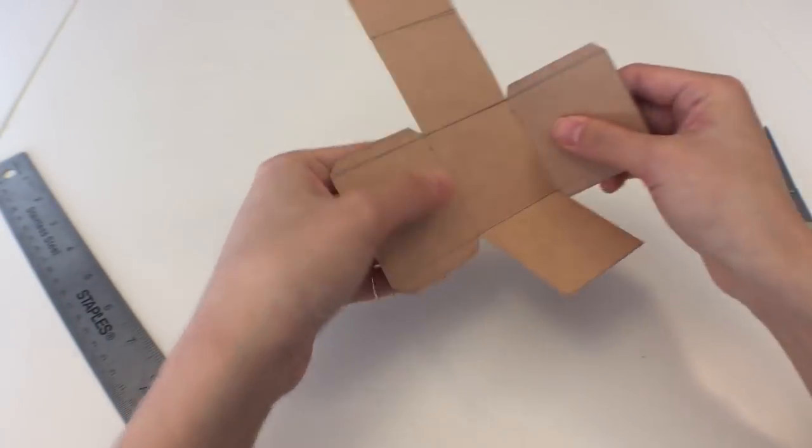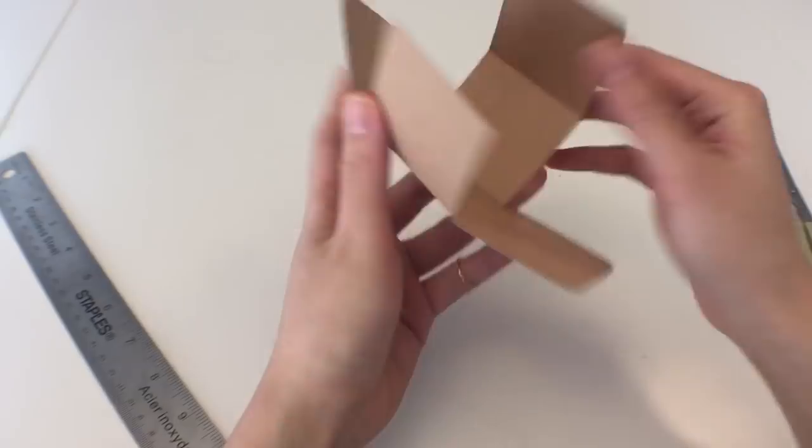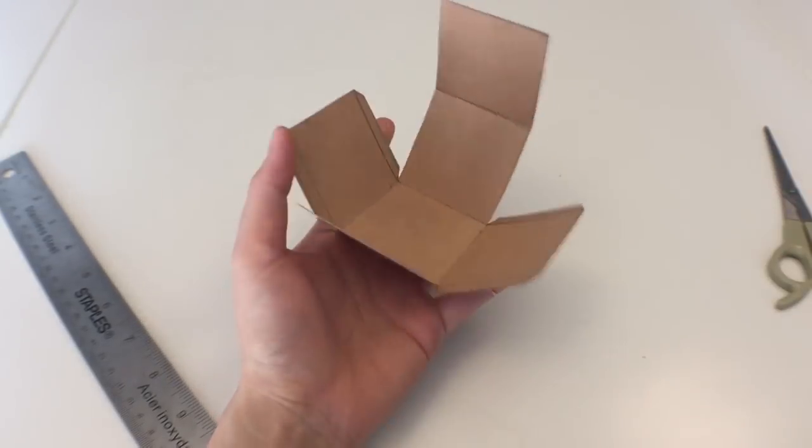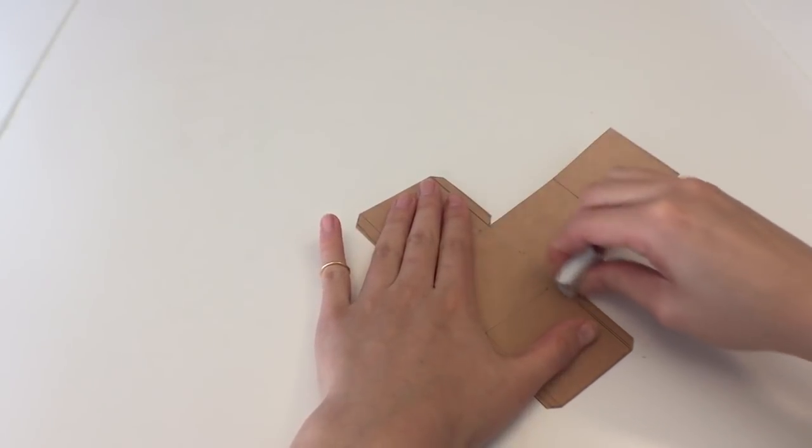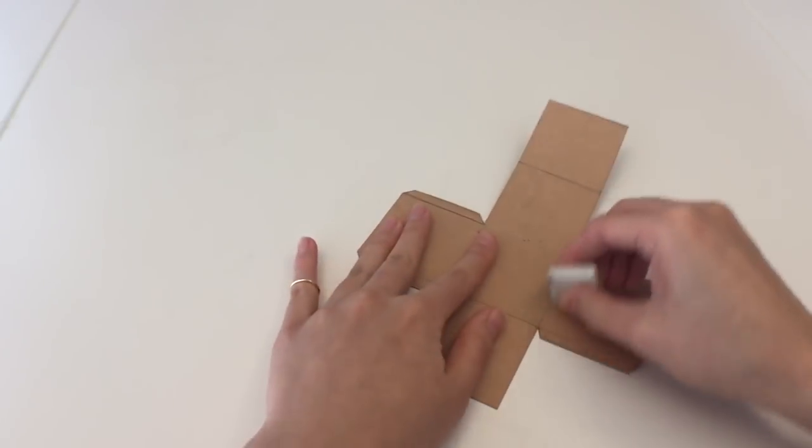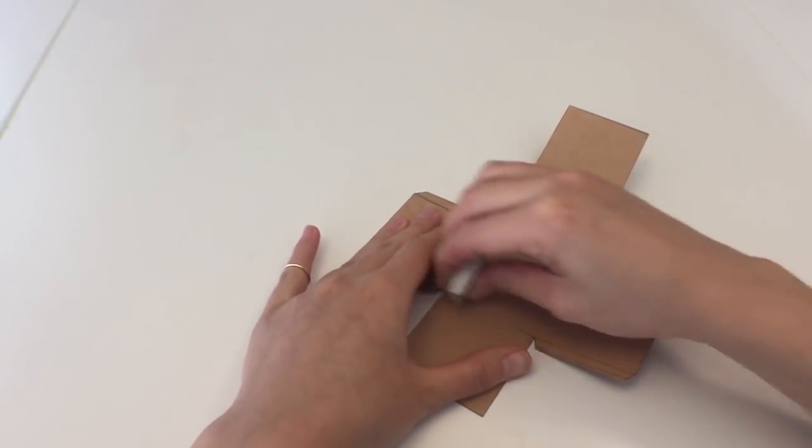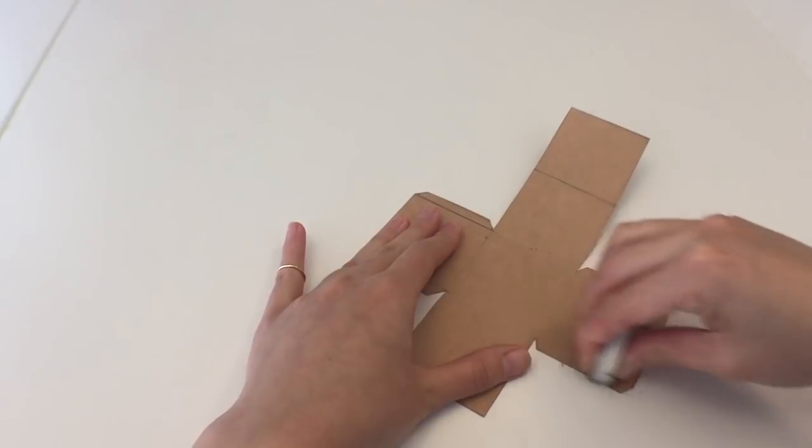And just fold up all the sides. And you see a basic box is taking shape. And just to make everything look nice, I'm going to erase the lines that I have drawn, since I already folded all the edges that I needed.